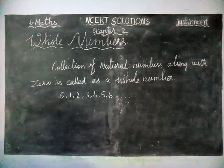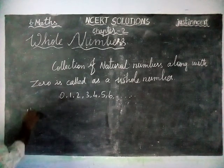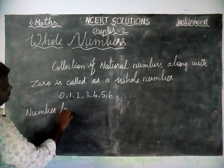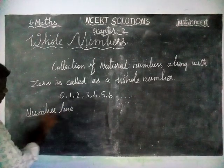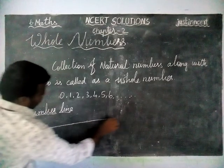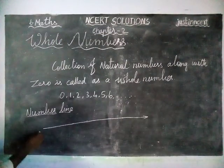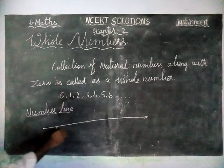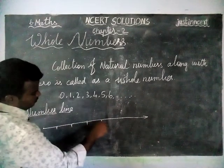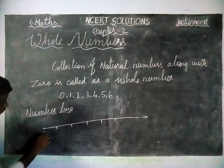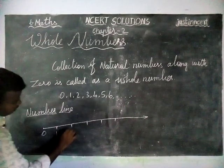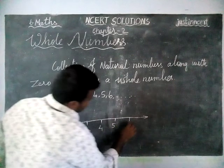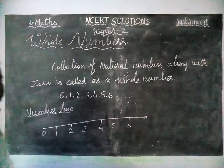The number line for whole numbers starts from 0, then 1, 2, 3, 4, 5, 6, and keeps on going.